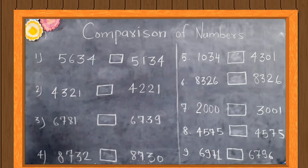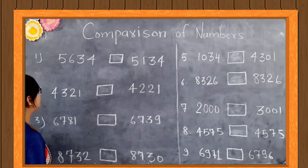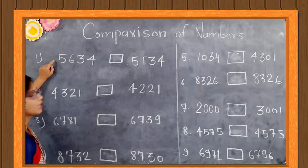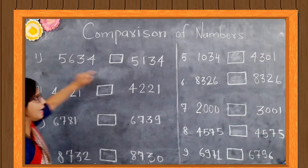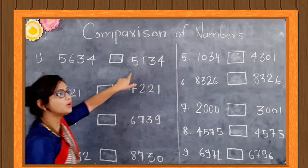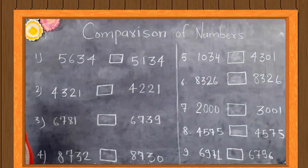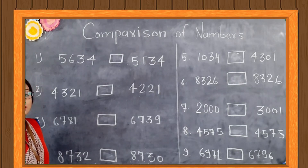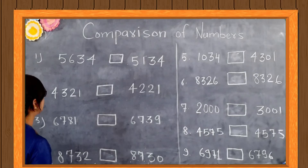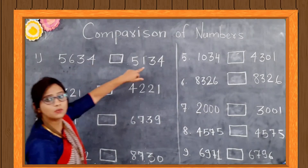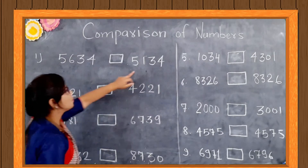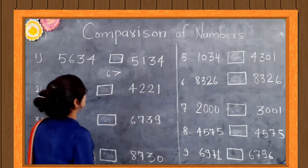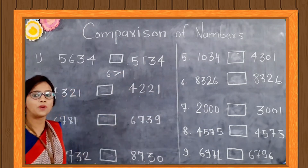Let's understand with an example. We begin by comparing the digit at the 1000 place: 5 and 5. Both numbers are the same here. So we move to compare by the 100 place. The digit at the 100 place is 6 and 1. So 6 is bigger than 1.